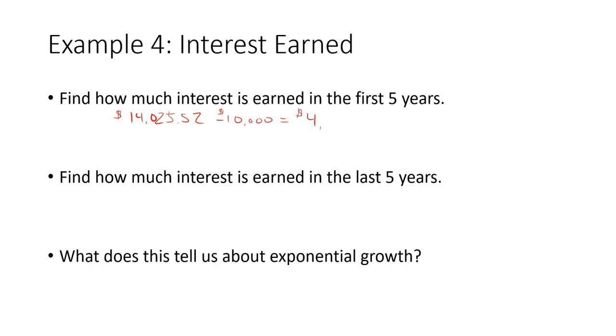Now to find the interest earned in the last five years, we probably have to calculate this for year 35 and for year 40. So this is $10,000 times 1.07 to the 35th power, and $10,000 times 1.07 to the 40th power. And then we're just going to subtract the two. $106,000 after 35 years, after 40 years, $149,744.58.